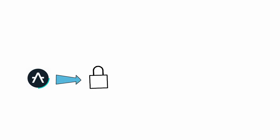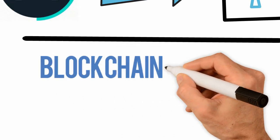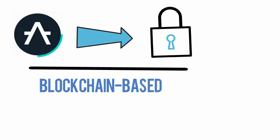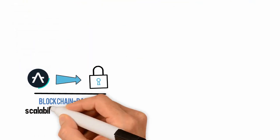Alef Zero is a privacy-focused DAG-based layer one protocol that aims to solve the blockchain trilemma — a protocol-level issue with blockchain technology that forces blockchain-based protocols to choose between decentralization, scalability, and security.